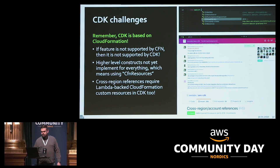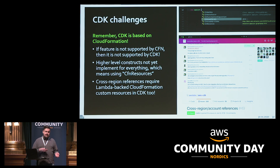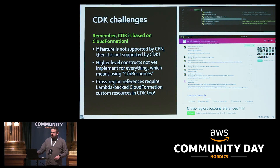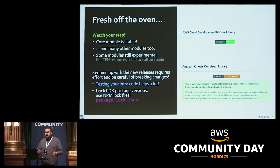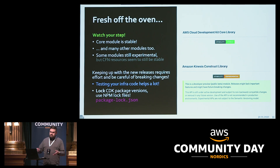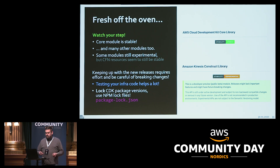A couple of challenges with CDK: it's based on CloudFormation, so if CloudFormation can't do something, CDK probably can't either without Lambda-backed custom resources. For example, if you have two stacks in different regions, you can't reference values across regions without a Lambda custom resource. The core library is stable now, but other modules are still experimental — though you can always use the CFN level one constructs from those, which are more stable. Also, keeping up with CDK releases can take effort — we have Slack bots pinging us about new versions. Testing your infrastructure code helps catch almost all versioning-related bugs, and of course lock your dependencies.